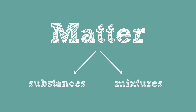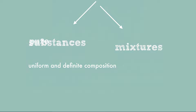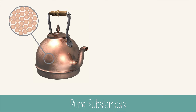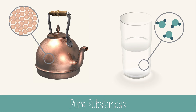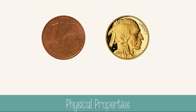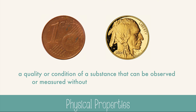Substances are often referred to as pure substances because they have a uniform and definite composition. For example, this copper kettle is mostly made of copper. A copper kettle and a copper coin will have the same properties because they're made of the same substance. Water in this glass is also a pure substance — it's uniform and made of all of the same compound, H₂O. A physical property is a quality or condition of a substance that can be observed or measured without change in its composition.